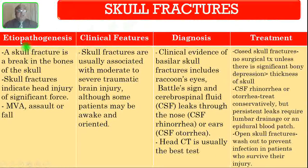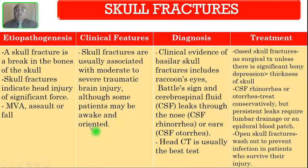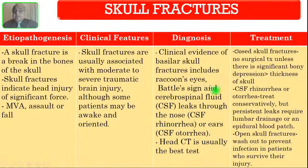Skull fracture etiopathogenesis: a skull fracture is a break in the bones of the skull indicating head injury of significant force. Causes include motor vehicle accident, assault, or fall. Skull fractures are usually associated with moderate to severe traumatic brain injury, although some patients may be awake and oriented. Clinical evidence of basilar skull fractures includes raccoon's eyes, Battle's sign, and CSF leaks through the nose — CSF rhinorrhea — or through the ears — CSF otorrhea.